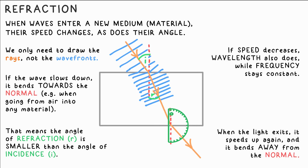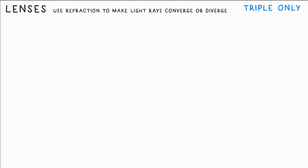The rest of waves is triple only, so skip to magnetism if you're double. Lenses. Oh boy, here we go. Okay, lenses are curved blocks of glass. Also, you have them in your eyes. They use refraction to make rays of light converge, meet, or diverge, spread out.